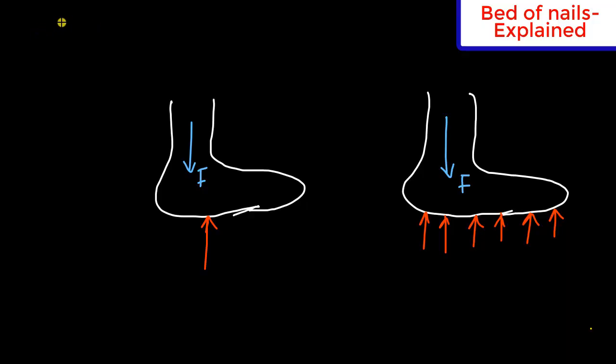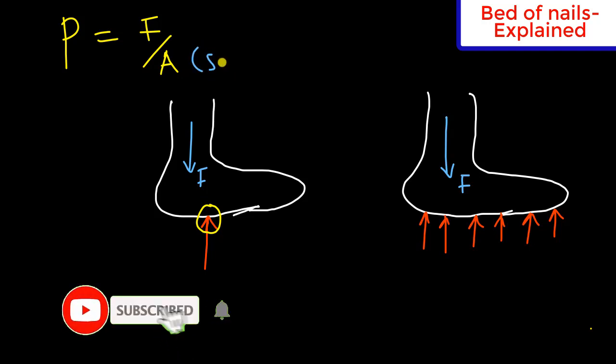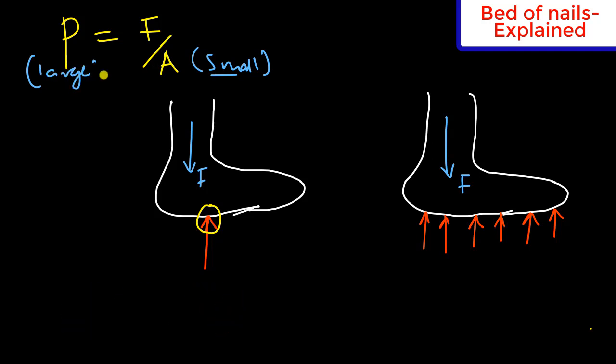To explain this, we understand that pressure is given by the force acting on an area divided by the effective area. In this diagram, as you can see, the effective area is very small, and so mathematically if the area is very small, the pressure is going to be large resulting from a small denominator.